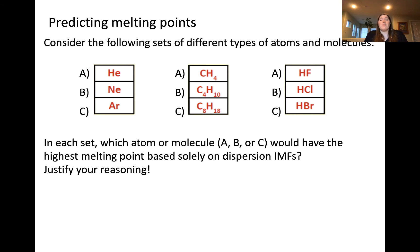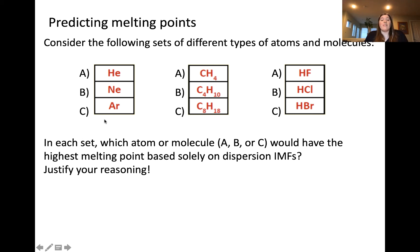Let's compare melting points of different substances, shown as these sets. Set one is helium, neon, and argon. Set two are these hydrocarbons. And set three are these different diatomic molecules with halogens. Based on what you've learned so far, within each set, which atom or molecule would have the highest melting point based on dispersion?